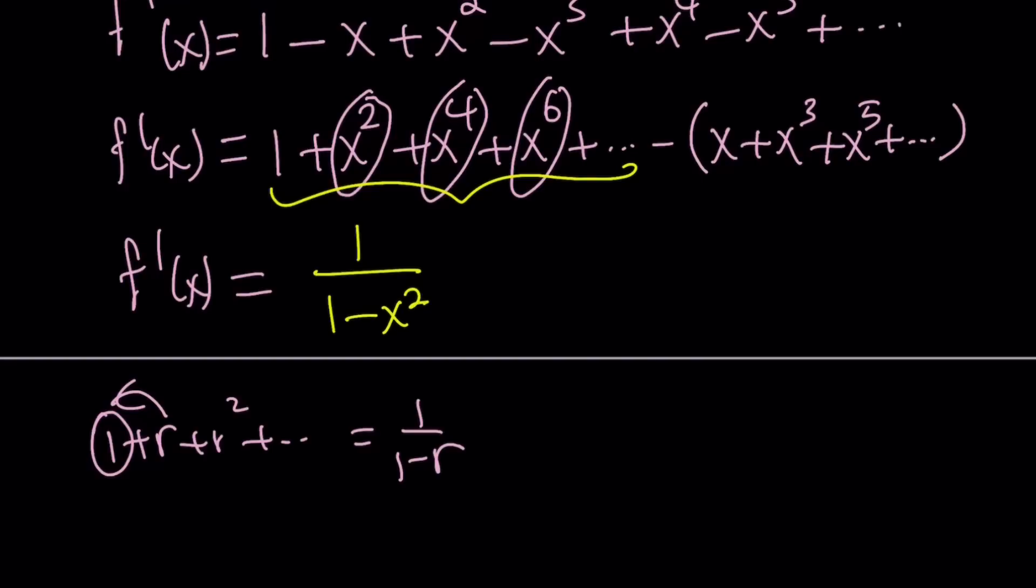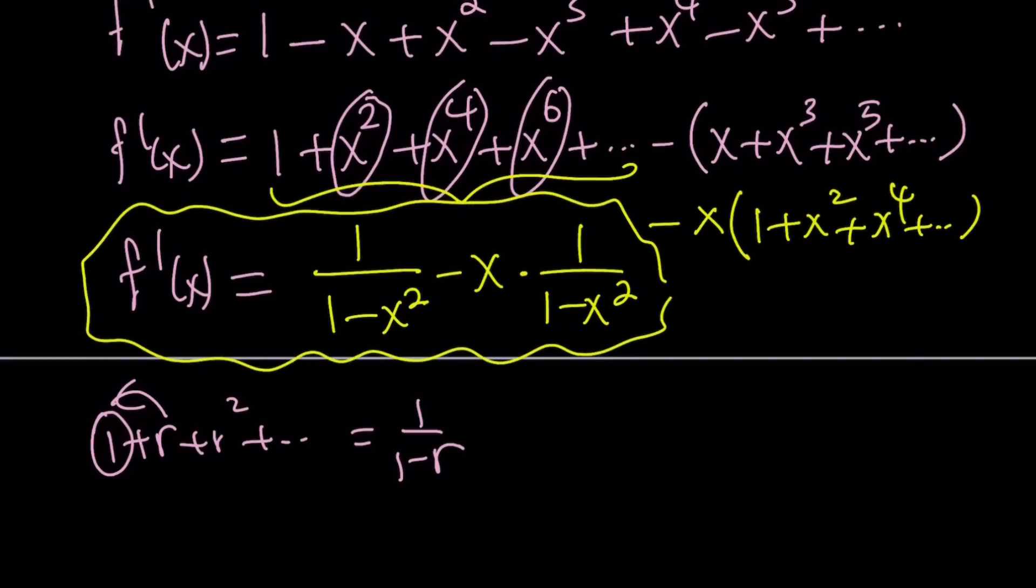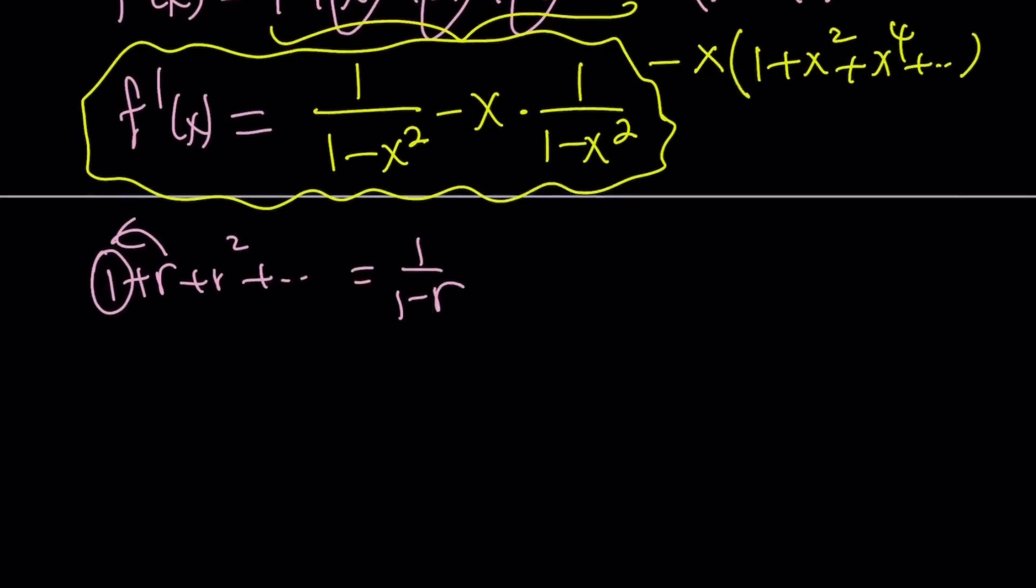What about the second part? I can take out a minus x, and inside, I'm going to get 1 plus x squared plus x to the fourth and so forth. It's the exact same thing. So this is going to be minus x times 1 over 1 minus x squared. Isn't that awesome? We got a closed expression for f prime of x, which is really, really cool.